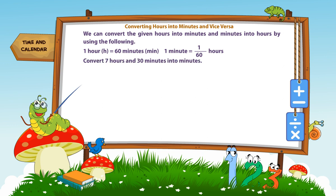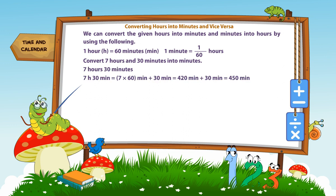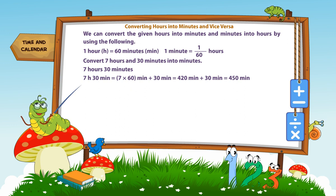Convert 7 hours and 30 minutes into minutes. 7 hours 30 minutes is equal to 7 multiplied by 60 minutes, plus 30 minutes, which equals 420 minutes plus 30 minutes, which is equal to 450 minutes.